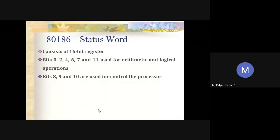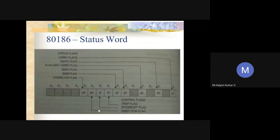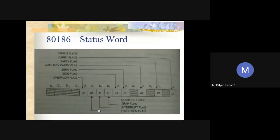The status word records results of logical and arithmetic instructions and certain bits control the operation of the 80186 within specific operating modes. Bits 0, 2, 4, 6, 7, and 11 are used for arithmetic and logical operations, whereas bits 8, 9, and 10 are used to control processor operations. The flag register diagram is almost similar to the PSW of 8086.